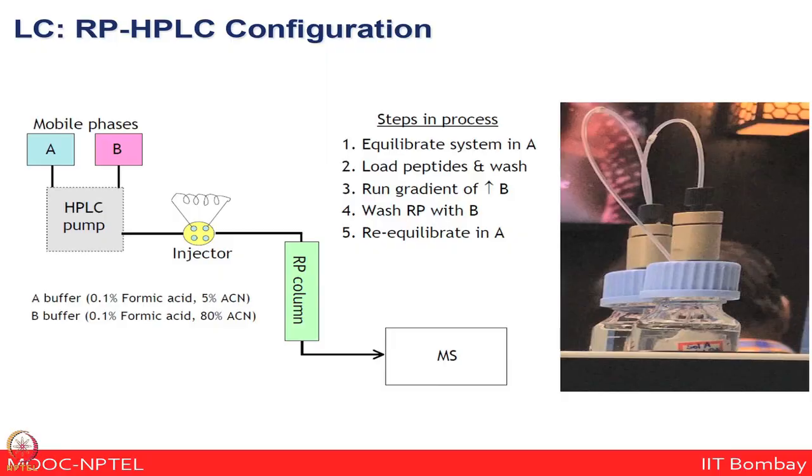A popular configuration is reverse-phase HPLC where you sequentially eject peptides based on hydrophobic and hydrophilic interactions, using a gradient of formic acid and acetonitrile. Once peptides are bound in the reverse-phase C18 material, you sequentially eject them based on this gradient, so not all peptides come out of the HPLC column at the same time — rather, you separate them over a time period and directly analyze them using the mass spectrometer. This is known as the online configuration.